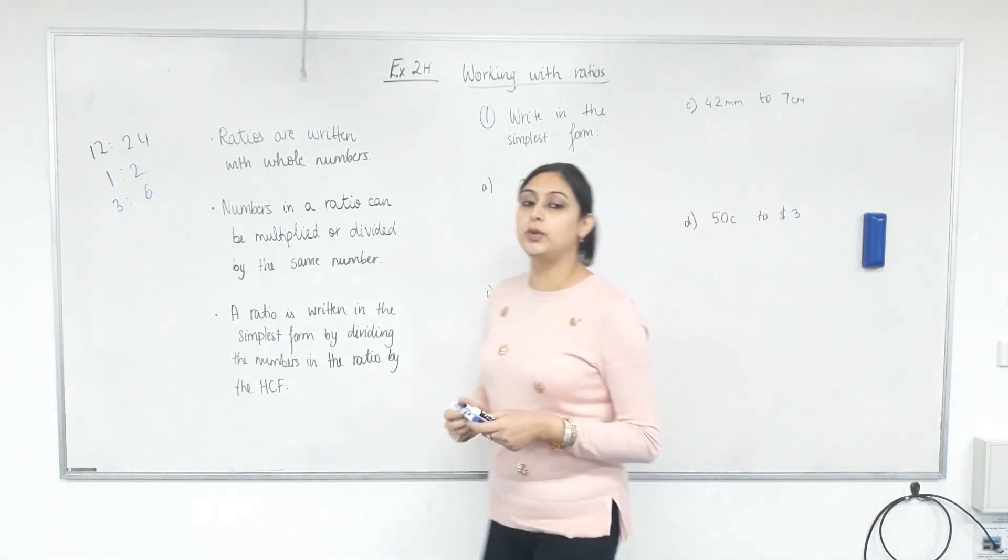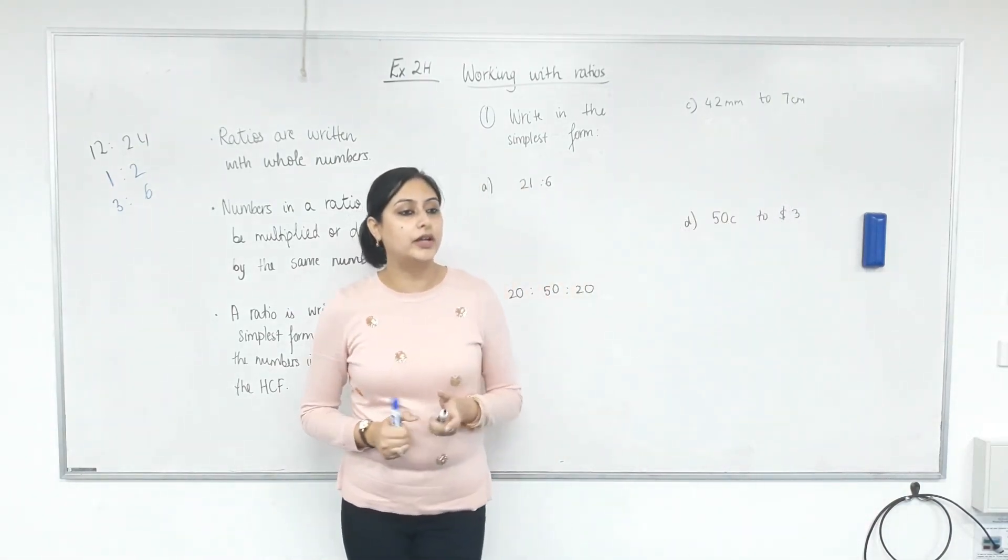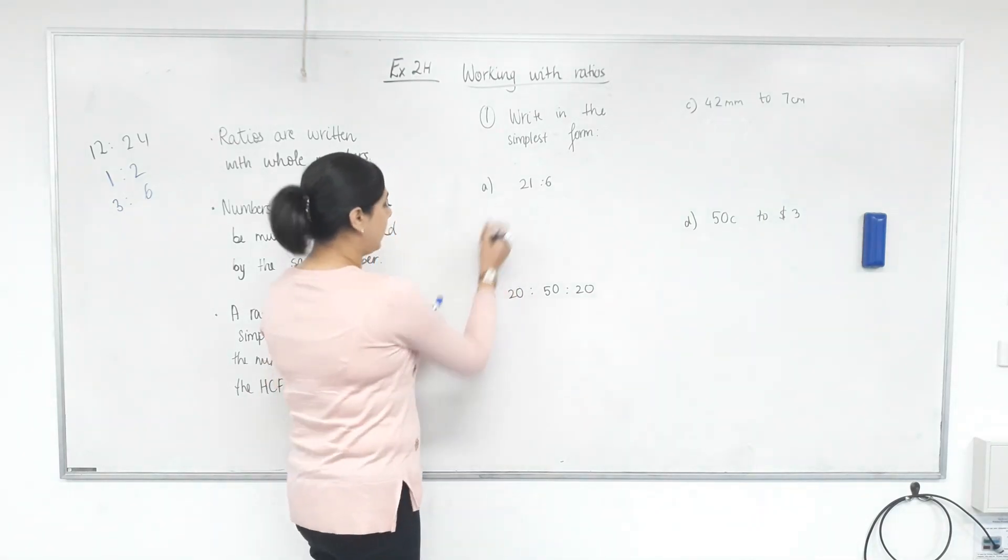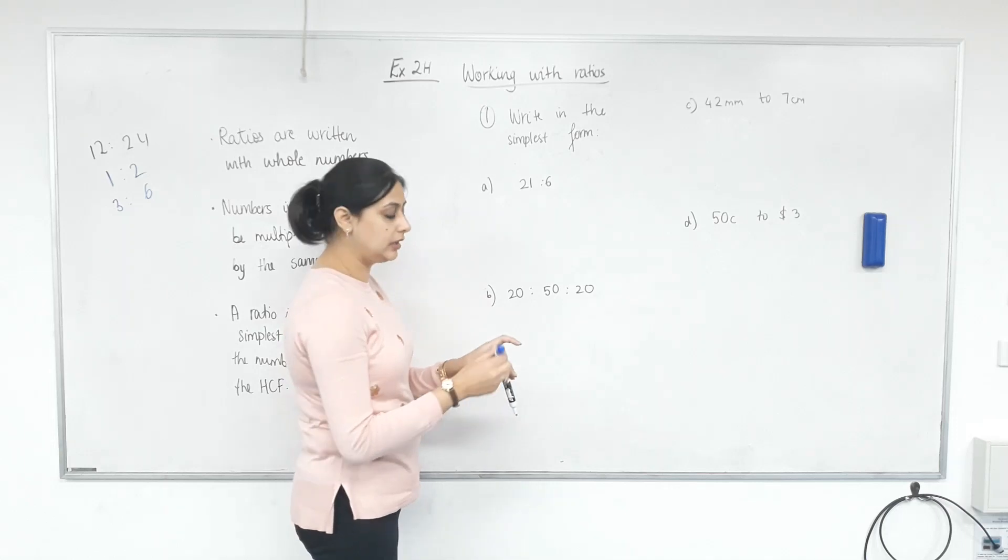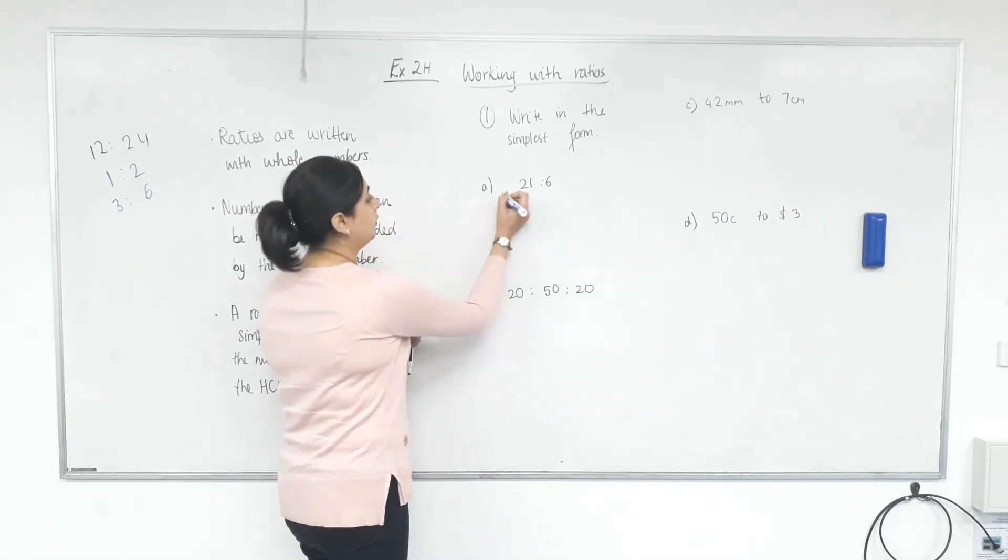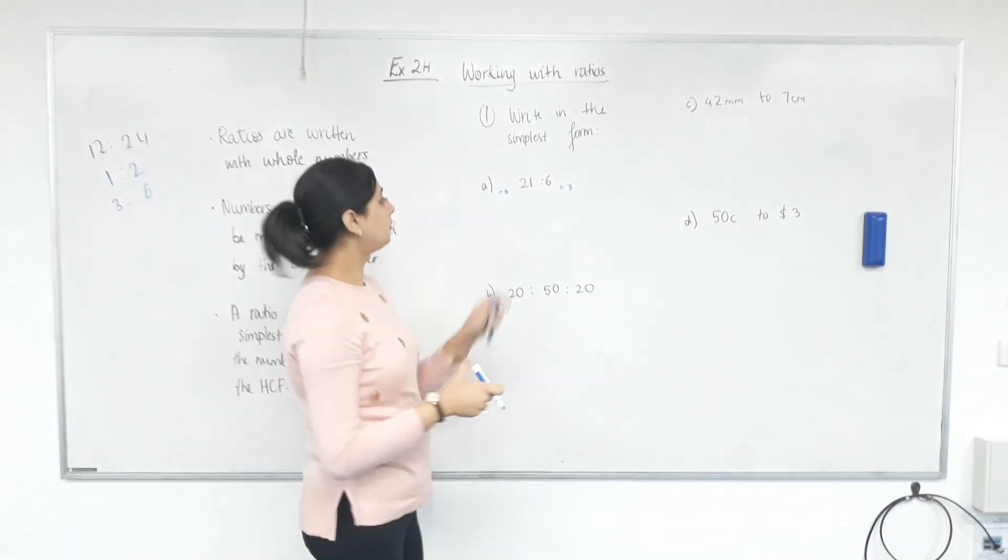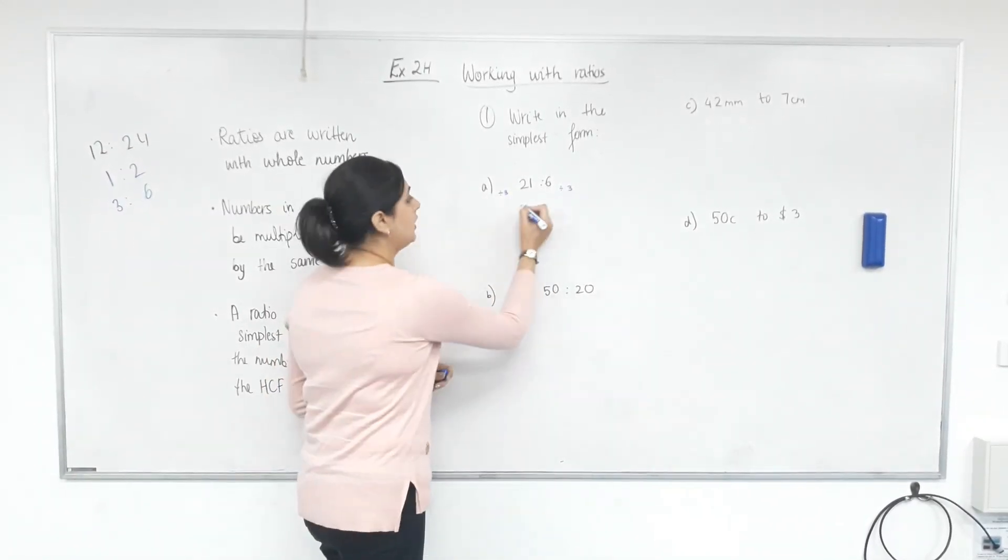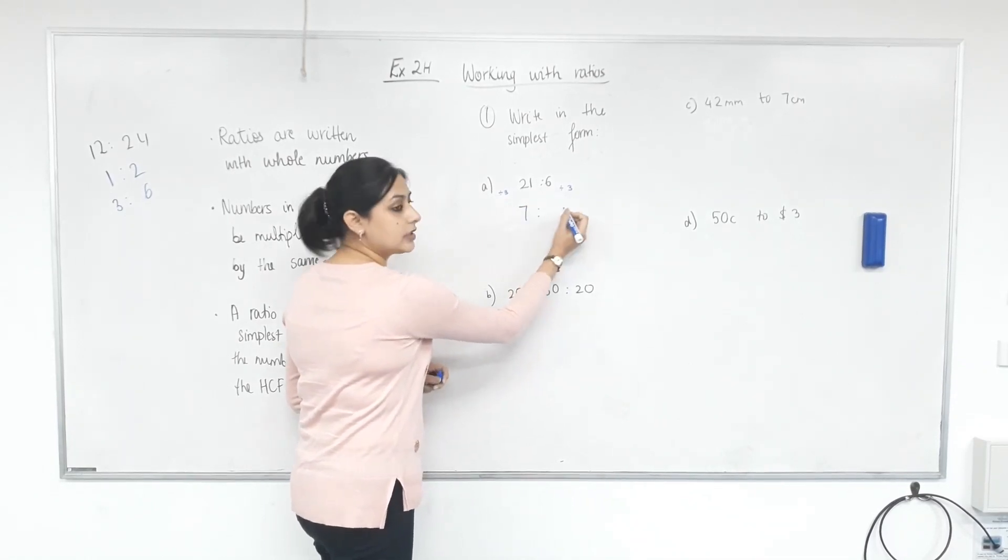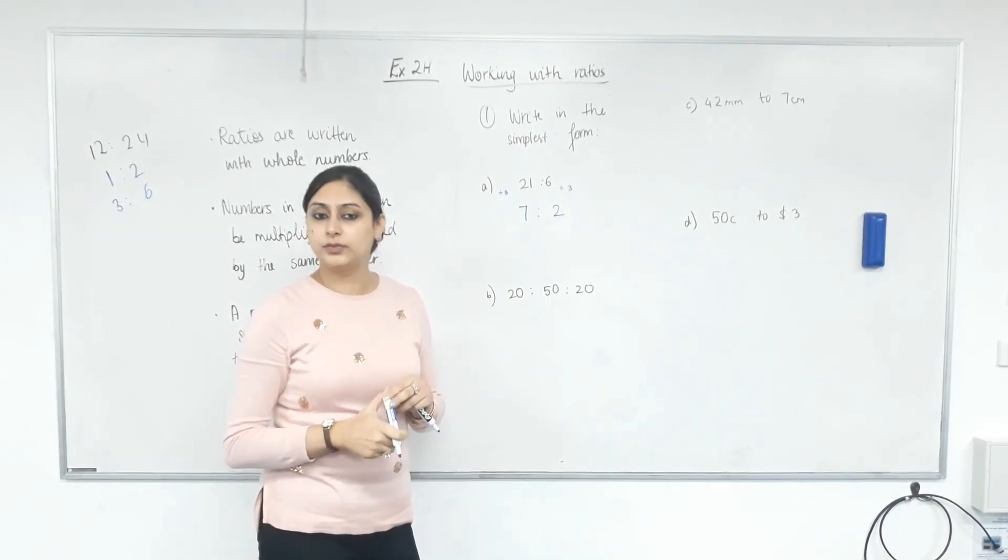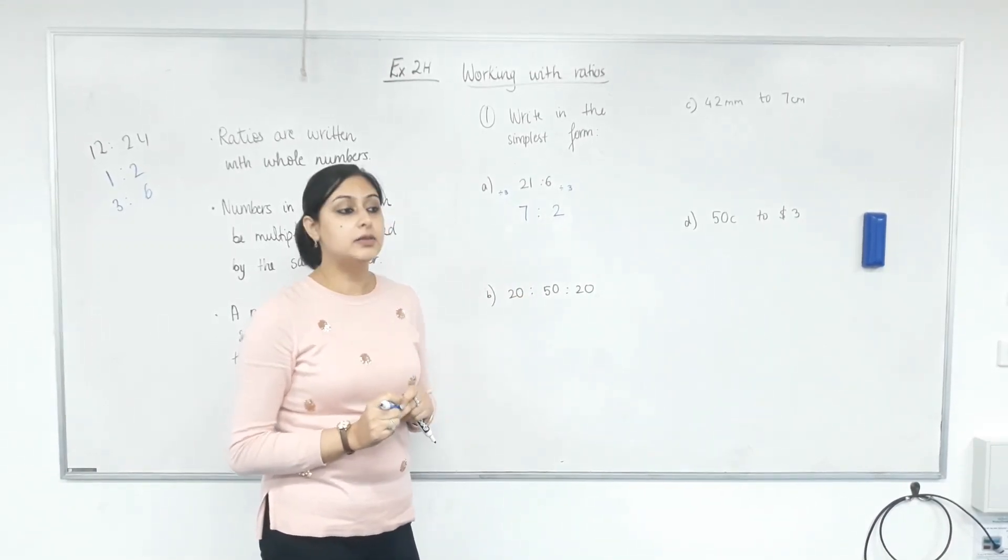Write in the simplest form 21 is to 6. Any common factors between 21 and 6? 3. So, basically, I'm just going to show this working out. You don't have to do it in the test or when you're doing your work. So this is so that you know what the teacher did in class for later. 21 divided by 3 is 7. Eyes on the board. And 6 divided by 3 is 2. So you have to keep the same order. You can't make it 2 is to 7. Is that right? That is simplified.